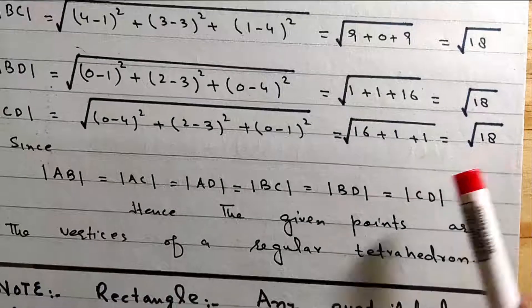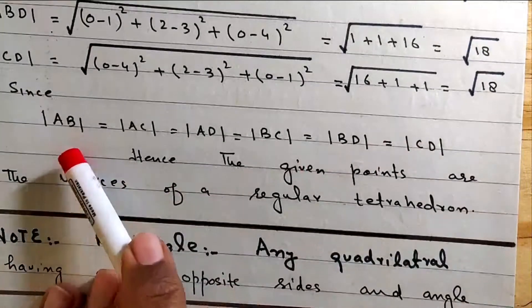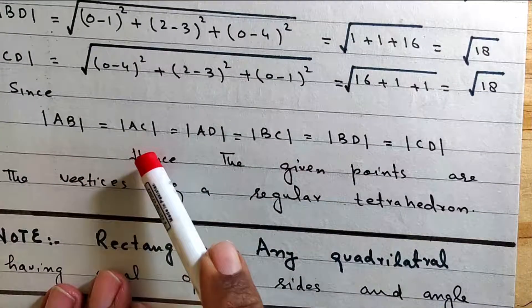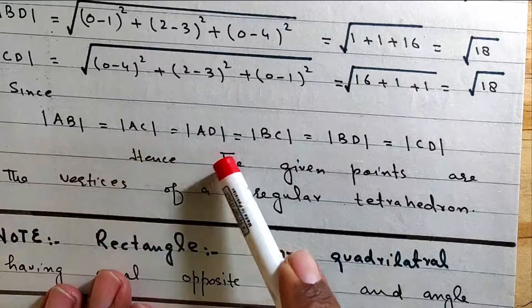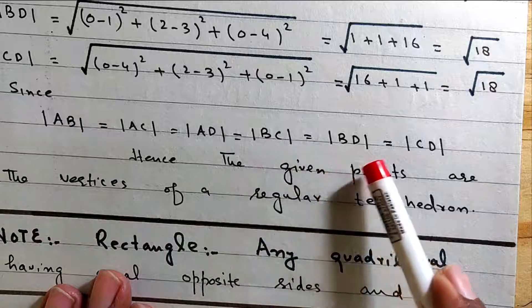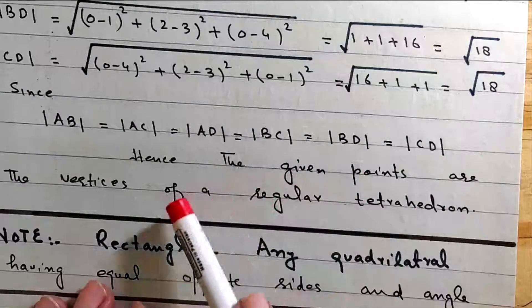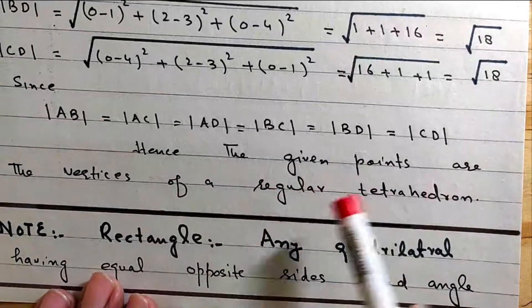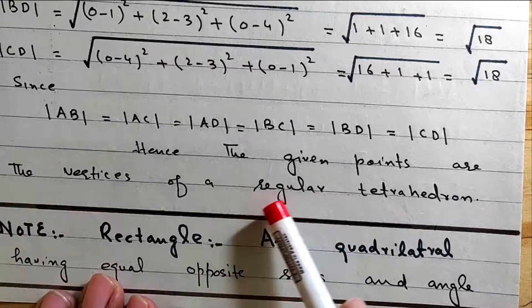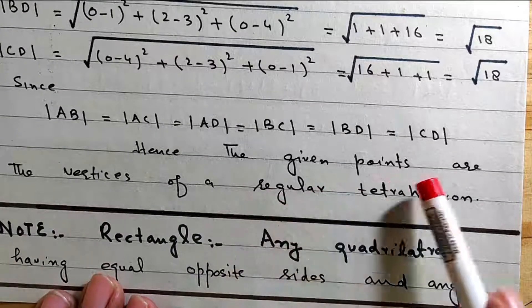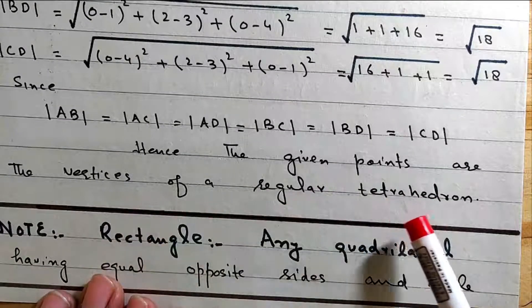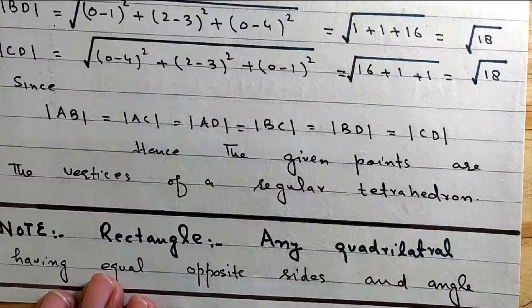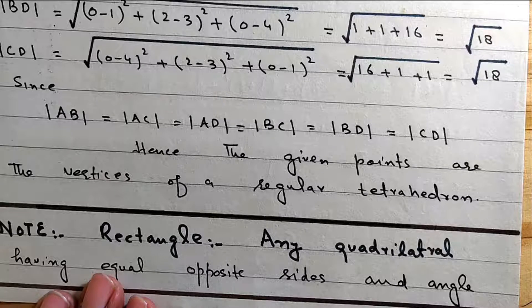Given three points are the vertices of a regular tetrahedron. By the given points are the vertices of the regular tetrahedron.